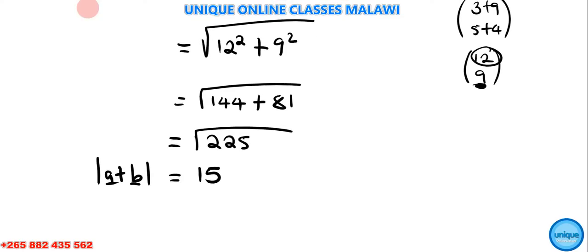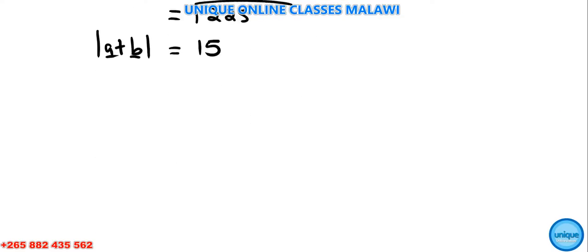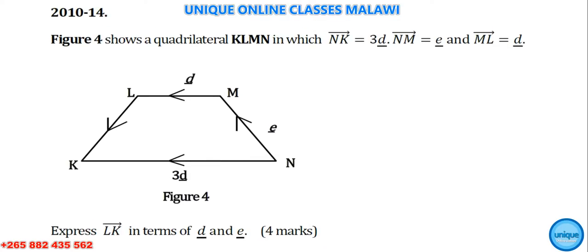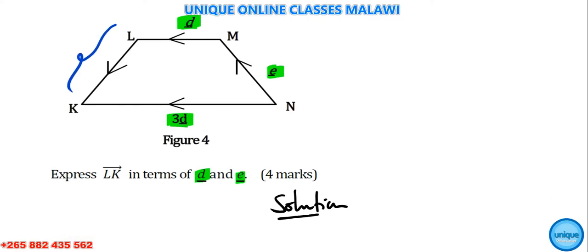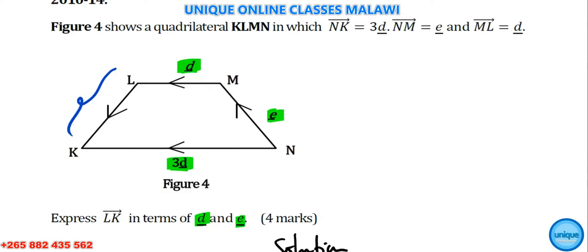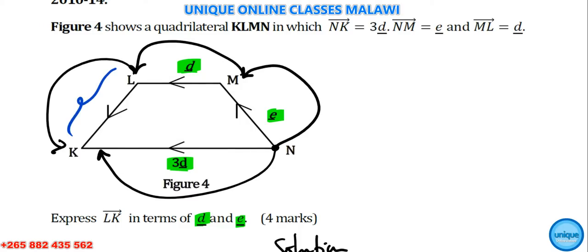Let's move on to another question. Figure 4 shows directed line segments in which NK equals 3d and NM equals e, whereas ML equals d. We should express LK in terms of d and e. This was worth 4 marks, question 14, 2010.